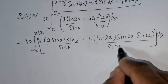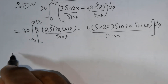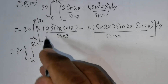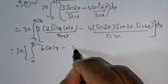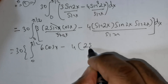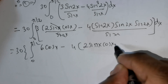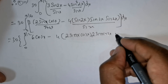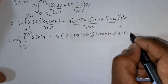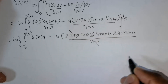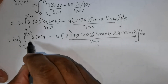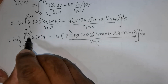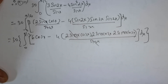Divided by sin x — clearly sin x cancels. This gives us 30 times integral from 0 to pi over 2 of: 3 times 2 is 6, so we have 6 cos x, minus 4 times sin 2x written as 2 times sin x cos x, divided by sin x. Again sin x cancels.